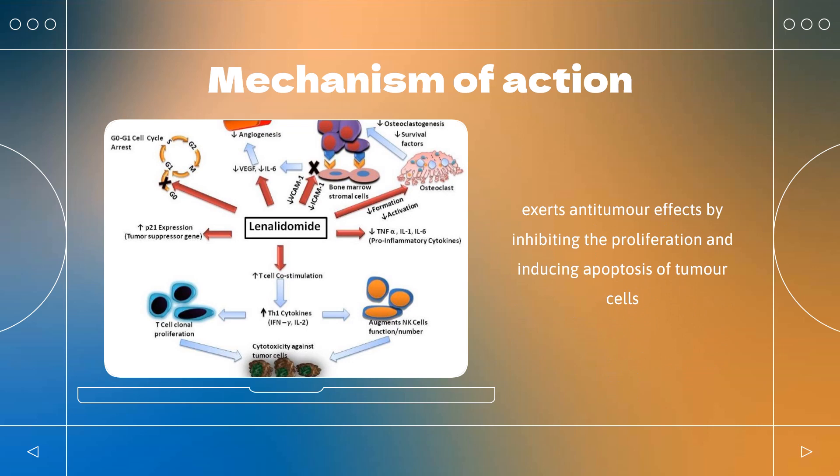Mechanism of action: Lenalidomide directly exerts antitumor effects by inhibiting the proliferation and inducing apoptosis of tumor cells. Lenalidomide triggers the activation of pro-apoptotic caspase-8, enhances tumor cell sensitivity to FAS-induced apoptosis, and down-regulates NF-κB, an anti-apoptotic protein.